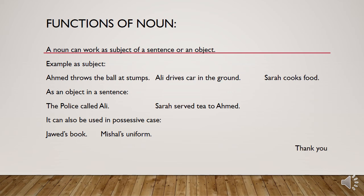Now, noun functions — how can we use a noun in our sentences? A noun can work as the subject or object of a sentence. As a subject: 'Ahmed throws the ball at stumps' — Ahmed is the doer of the action and therefore the subject. For an object: 'The police called Ali' — Ali is the object in this sentence. Sara served tea to Ahmed, and Ahmed is also the object here.